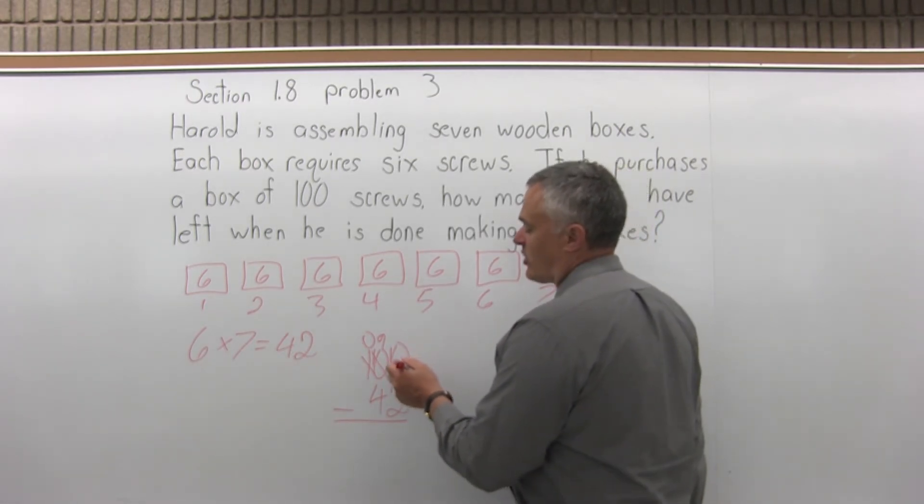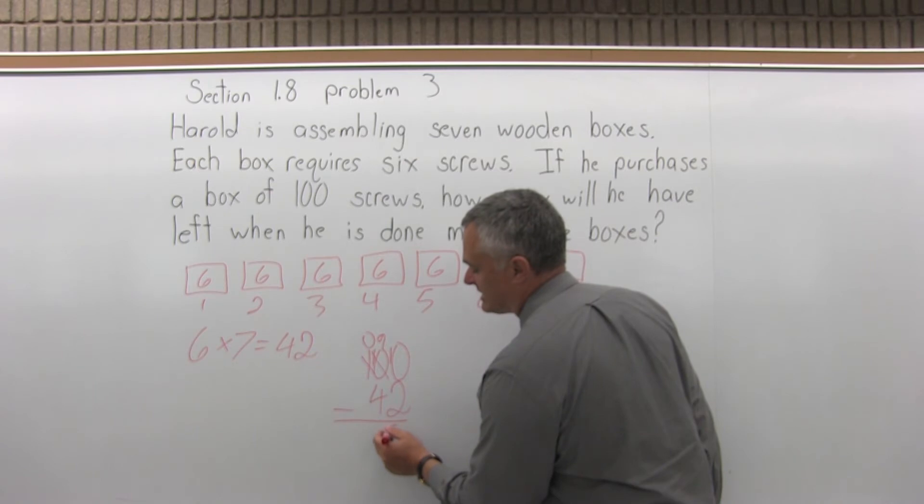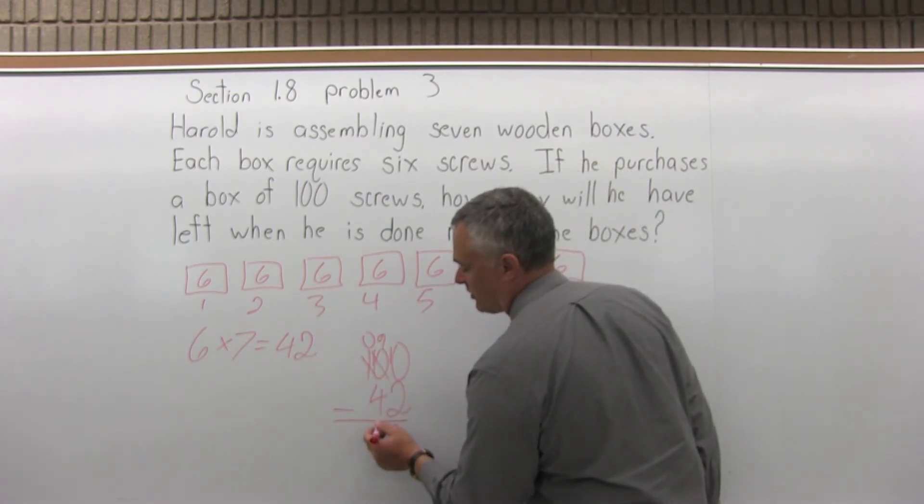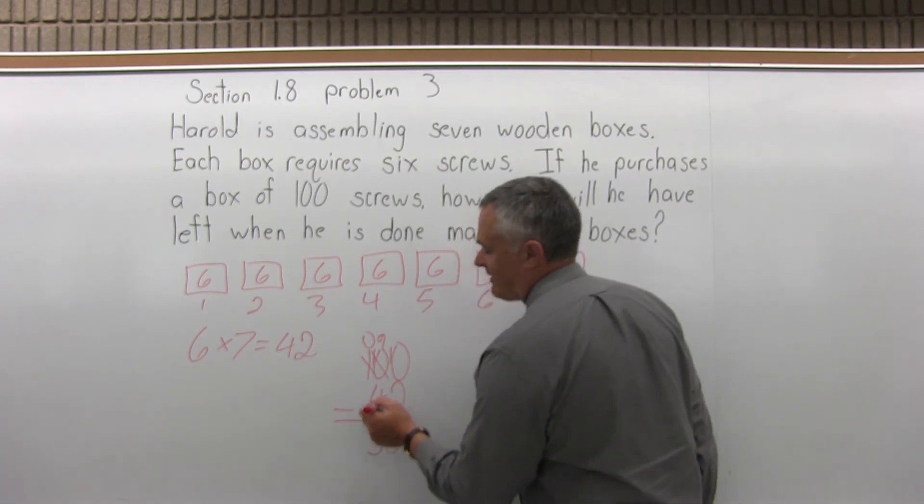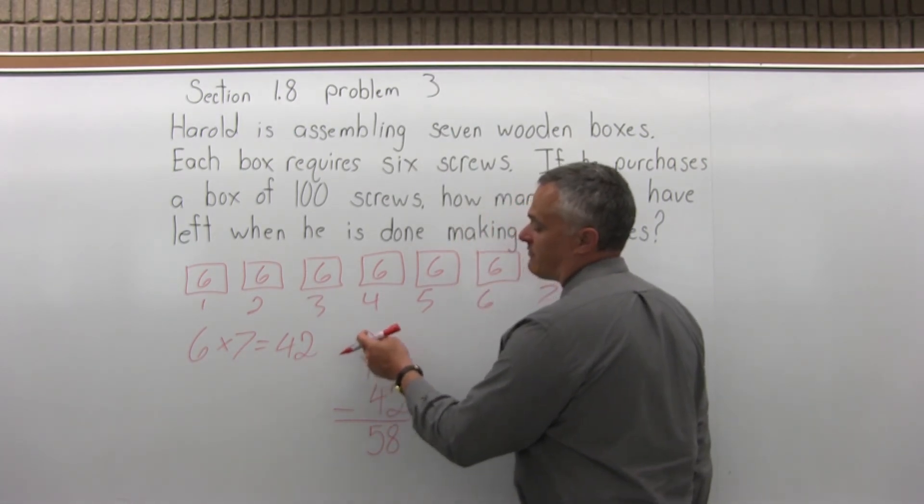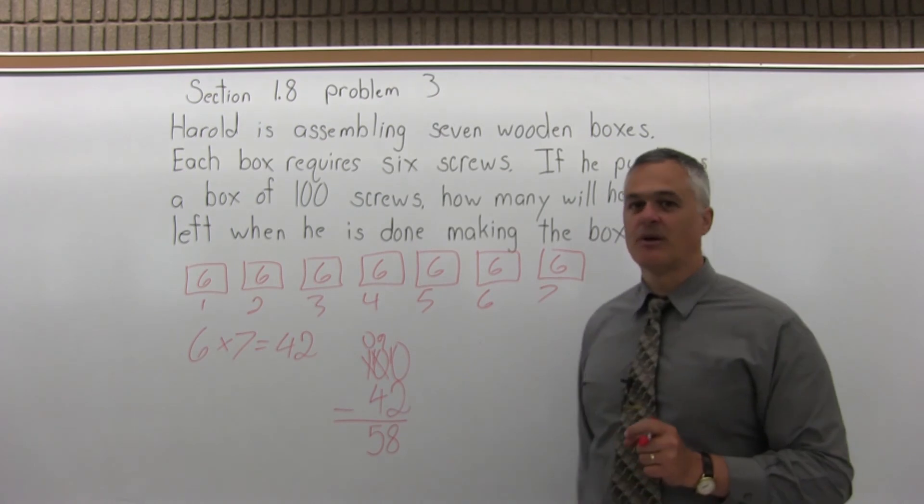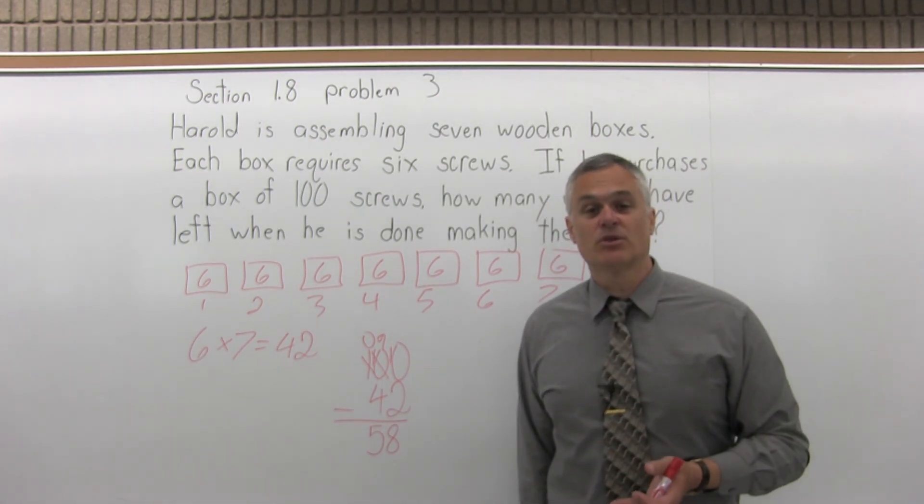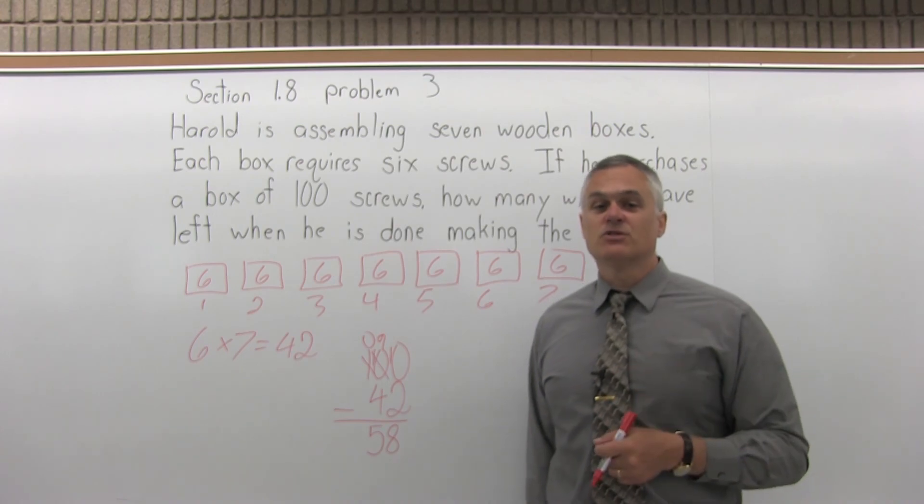In the far right column, I have 10 minus two, which is eight. In the next column over to the left, I have nine minus four, which is five. And then there was one more column to the left, but when I borrowed, I zeroed it out. So I'm actually done. And it does come out to 58. So when he's done assembling the boxes, there'll be 58 screws left in the box.